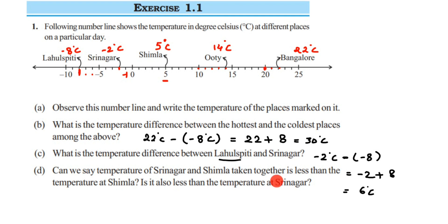The last question asks: can we say the temperature of Srinagar and Shimla taken together is less than the temperature of Shimla? Taken together means we have to add the temperatures of Srinagar and Shimla, and then compare that sum to the temperature of Shimla alone.